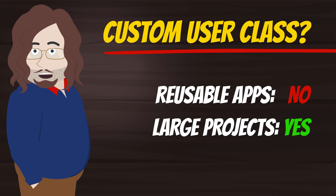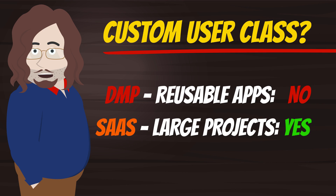I have been using Django since 2008 in most of the projects I worked on. For a long time the documentation was misleading about one of the first important choices in a Django project — whether to make a custom user class or not. Now it makes sense: don't do it for reusable apps, make reusable apps work with any class inheriting from abstract user. But for projects, don't think about it, do it. This is why I did not do it for DMP, but in this project we require a custom class.